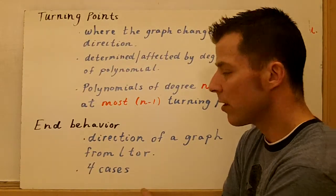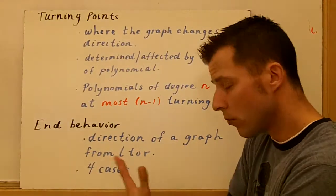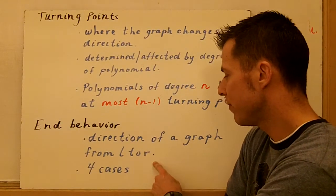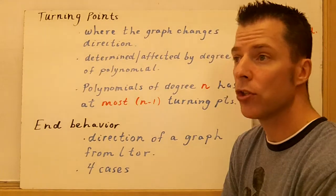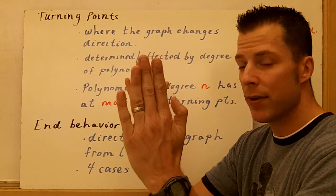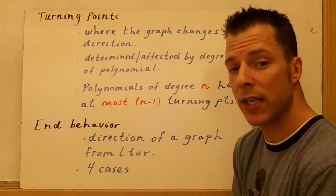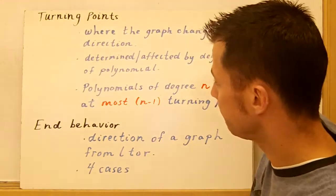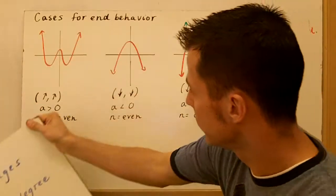End behavior. There are four cases of end behavior, and when we talk about the essential understanding, it's the direction of which the graph looks from left to right. So you're looking at what's happening at the ends. Not in the middle, you don't really care, but what's happening at the ends. When x approaches infinity and when x approaches negative infinity, there's four cases.